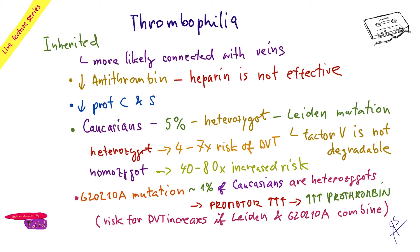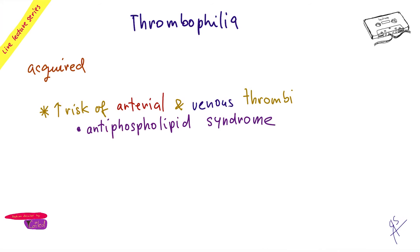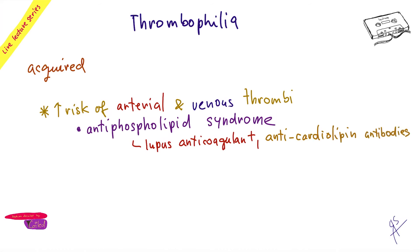You can also have decreased plasminogen - this is rare but again leads to increased risk of DVT. However, the most common cause of acquired thrombophilia is antiphospholipid syndrome. This is an autoimmune problem where you form autoimmune antibodies against phospholipids. You may have heard of lupus anticoagulant or anticardiolipin antibodies. These activate your thrombocytes and also thrombin. Watch out - antiphospholipid syndrome affects both arteries and veins, so you have increased risk of both infarction and DVT.